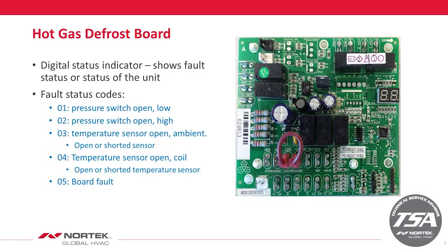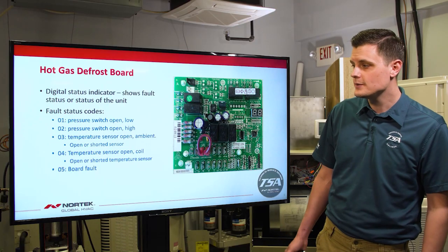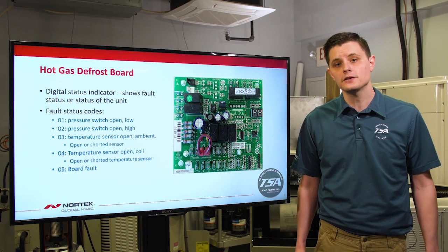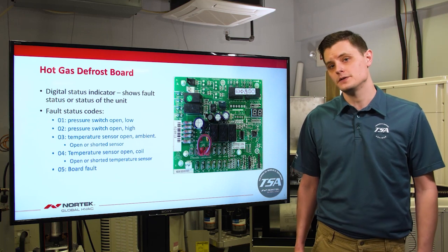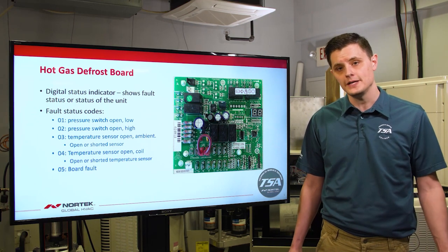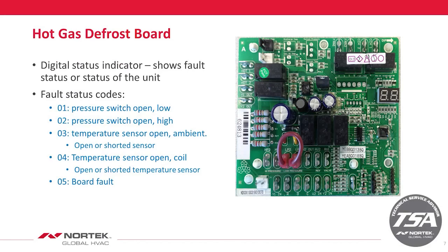There are up to five different fault codes on the board. Code 01 is your low pressure switch fault. Code O2 is a high pressure switch fault. Codes O3 and O4 revolve around the temperature sensors. O3 is your ambient sensor located in the control panel, and O4 is the coil sensor located at the bottom of the coil on the inside. An O5 code is a generic board fault — if you get an O5, you want to replace the defrost board.